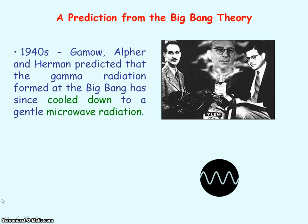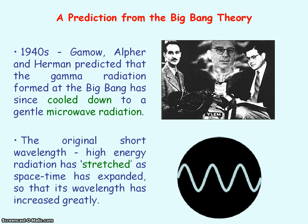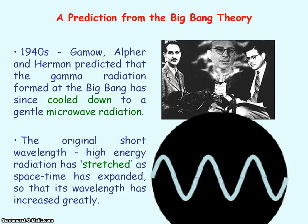The big bang theory predicts that the gamma radiation that was initially formed at the big bang has since cooled down to a gentle microwave radiation. The high frequency gamma radiation has stretched as spacetime has expanded, so the wavelength of the radiation has increased so that it's now in the microwave region.